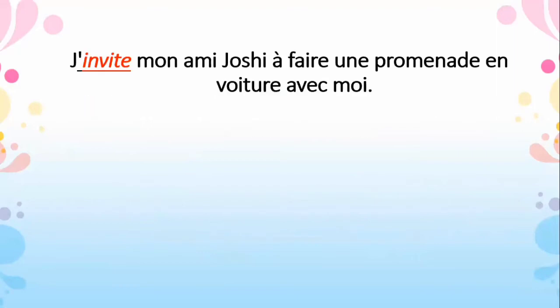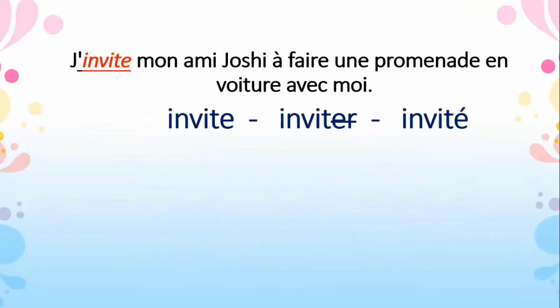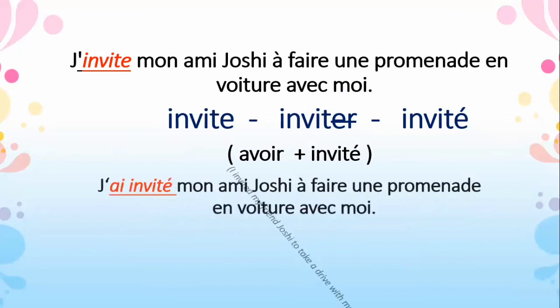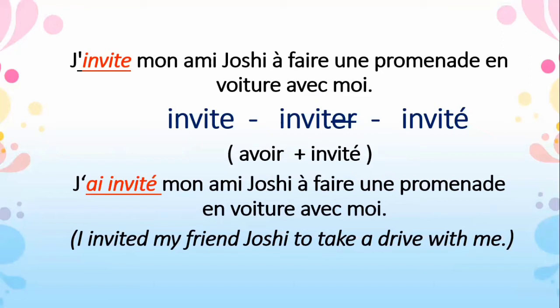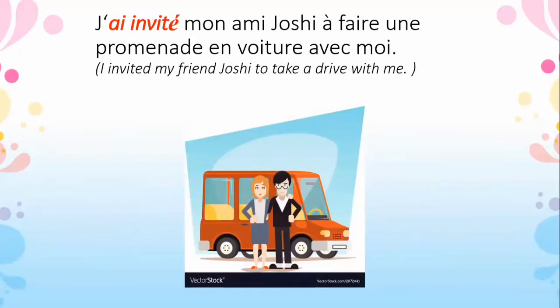Look at the first sentence: 'I invite my friend Joshi to have a drive with me.' The verb 'inviter' is a regular -er ending verb, so cut the -er and add é (e with accent aigu) to change to past participle. To change the sentence into past tense, first add the avoir verb according to the subject, then change the main verb into past participle. The answer is: j'ai invité mon ami Joshi à faire une promenade en voiture avec moi.